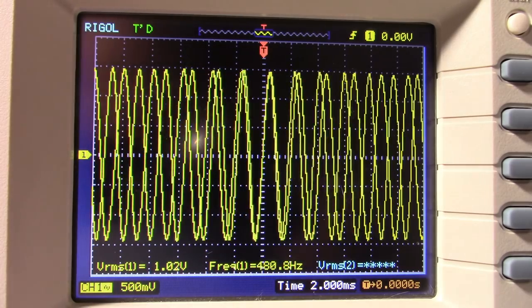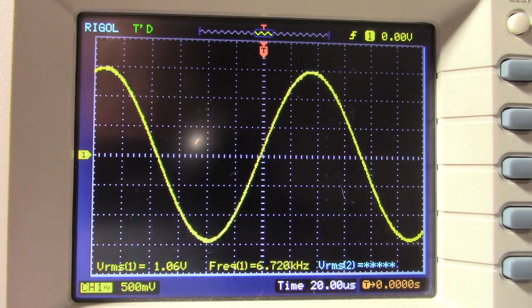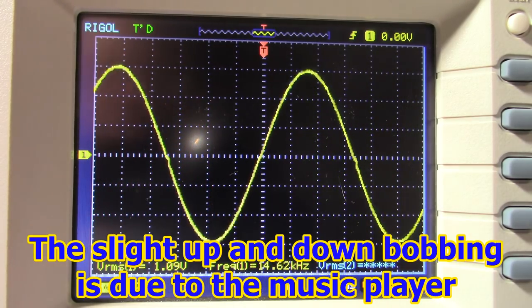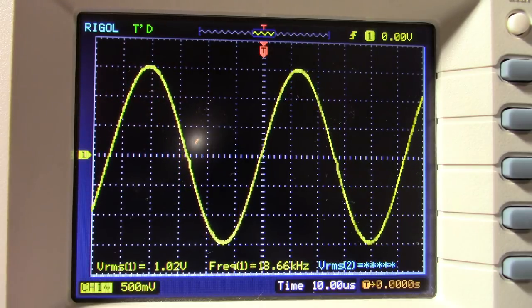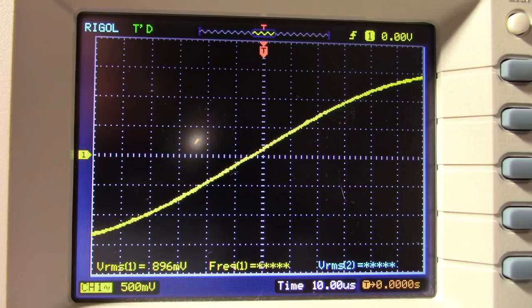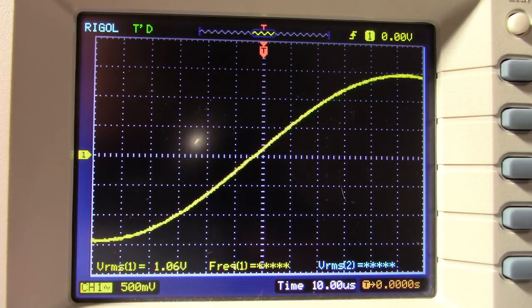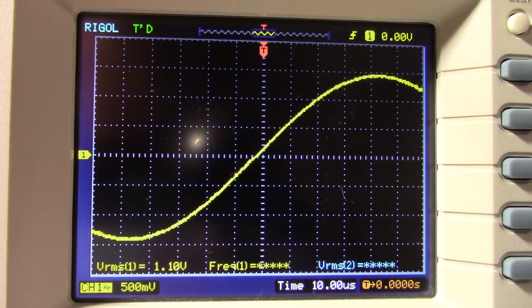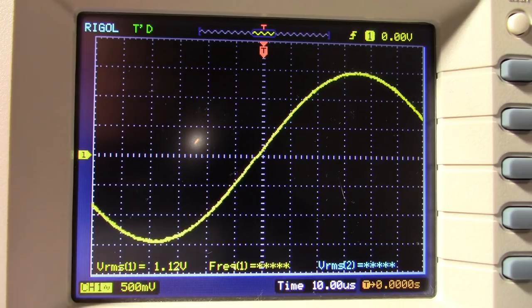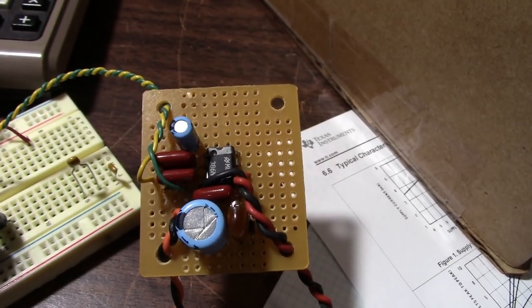We'll do a frequency response sweep here. Of course, the response is going to be pretty flat, except at the lower end because of the output coupling cap that I'm using. It's going to tend to roll it off at the very bottom of the frequency band. So there you go, a simple little LM386 board you can make that performs pretty good for what it is.